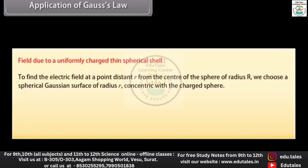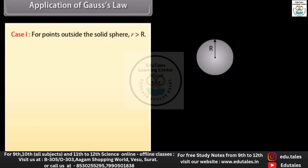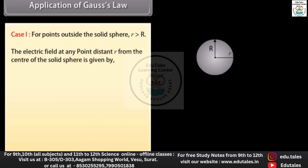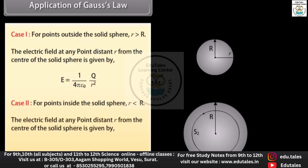Field due to a uniformly charged thin spherical shell: to find the electric field at a point distant R from the center of a sphere of radius r, we choose a spherical Gaussian surface of radius R concentric with the charged sphere. If ρ is the volume charge density, the total charge is q = (4/3)πr³ρ. Case 1 — for points outside the sphere (R > r): E = (1 / 4πε₀) × (q / R²). Case 2 — for points inside the sphere (R < r): E = (1 / 4πε₀) × (R³ / r³) × (q / R²), proportional to R/r³ times the charge.